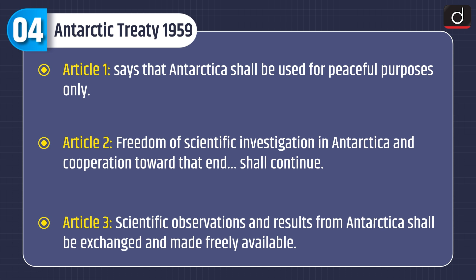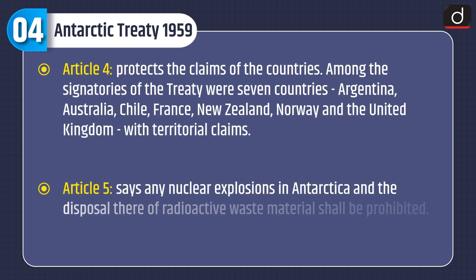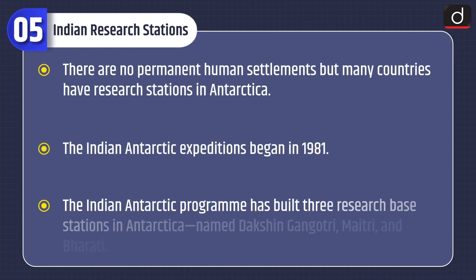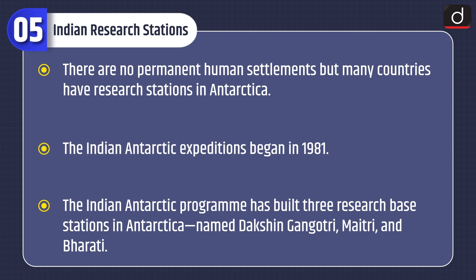Article 3 states that scientific observations and results from Antarctica shall be exchanged and made freely available. Article 4 protects the territorial claims of signatories — seven countries (Argentina, Australia, Chile, France, New Zealand, Norway, and the United Kingdom) had such claims. Article 5 prohibits any nuclear explosions in Antarctica and the disposal of radioactive waste material.